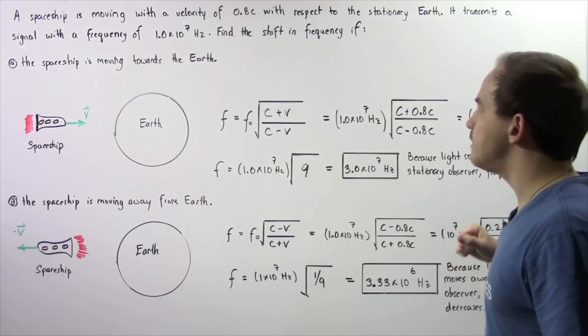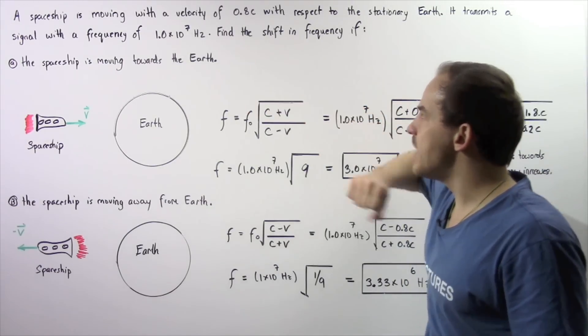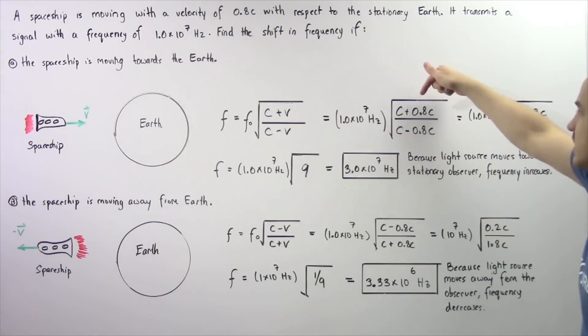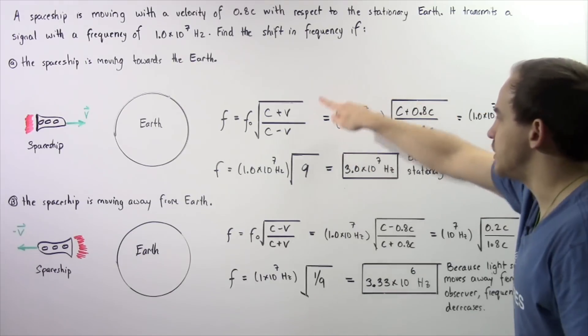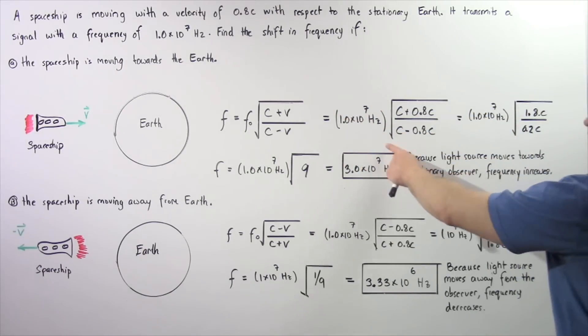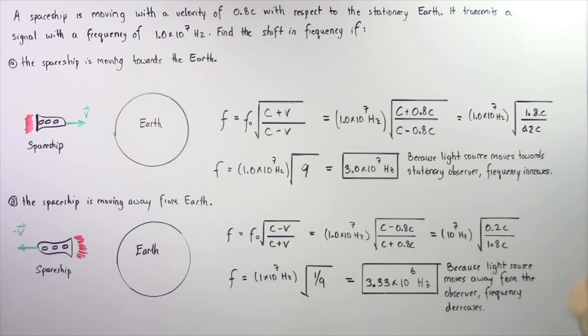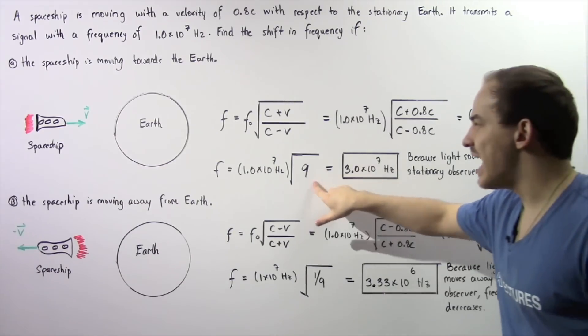Let's plug in our values. We know that f0 is equal to this quantity and v is equal to 0.8c. So we have 10^7 Hz multiplied by the square root of c plus 0.8c divided by c minus 0.8c. The top becomes 1.8c, the bottom becomes 0.2c, and the c's cancel out. So 1.8 divided by 0.2 gives us 9.